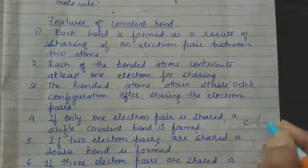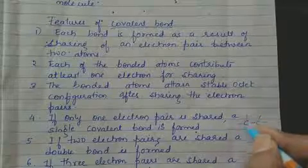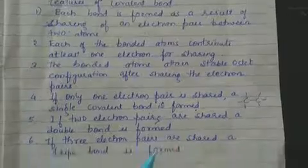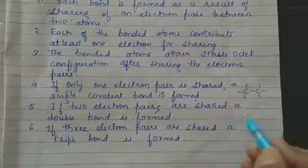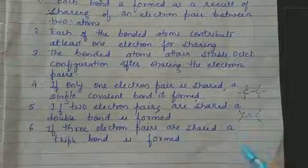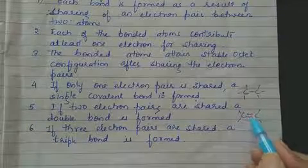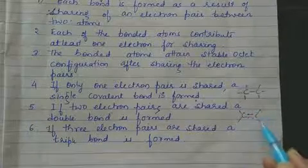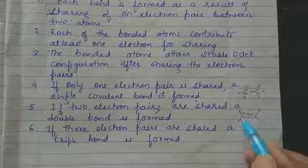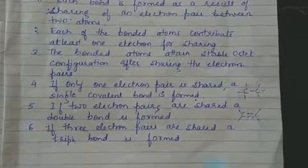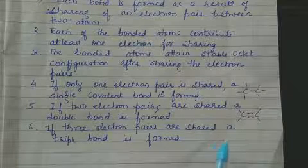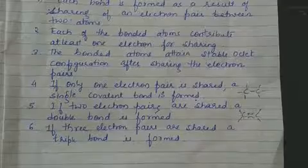If two electron pairs are shared, a double bond is formed — each carbon atom then has 8 electrons. If three electron pairs are shared, a triple bond is formed.